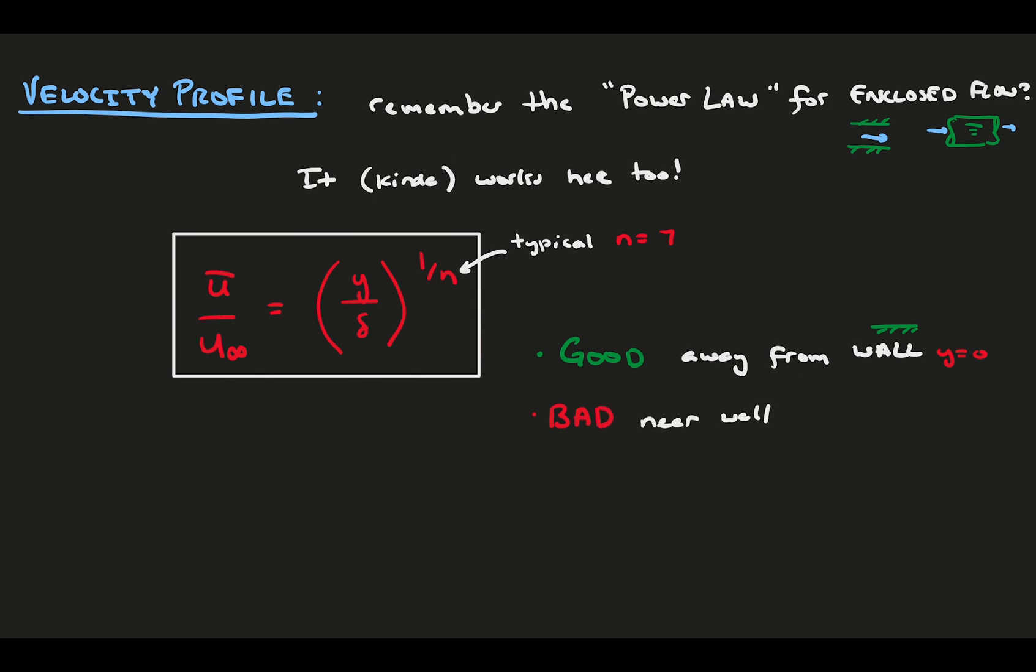However, the power law is bad near the wall. For example, the shear stress technically goes to infinity because of the slope of the velocity profile. Obviously, we can't have infinity drag, so we need a more creative approach for near-wall flow properties.